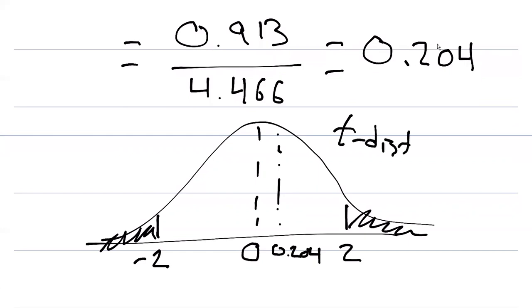With the value of 0.204, I'm not even going to bother looking this up on the critical table for t because I know I'm going to end up accepting the null hypothesis because this is such a small value of t.